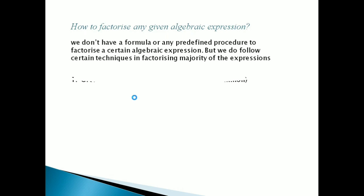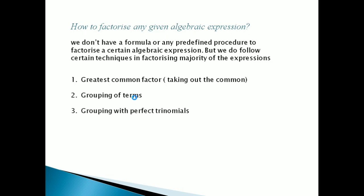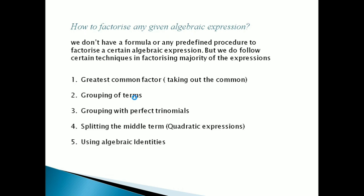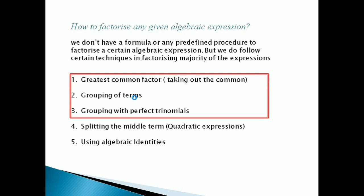First technique is Greatest Common Factor — taking out the common factor, short में GCF method। Second: grouping of terms। Third: grouping with perfect trinomials। Fourth: splitting the middle term और quadratic expressions का method। And fifth and the last: using algebraic identities। पूरे chapter में ये पाँच techniques से factorization कैसे करते हैं वो सीखना है। आज की इस video में पहली तीन techniques के बारे में बताऊँगा और subsequent videos में अगली दो cover करेंगे।